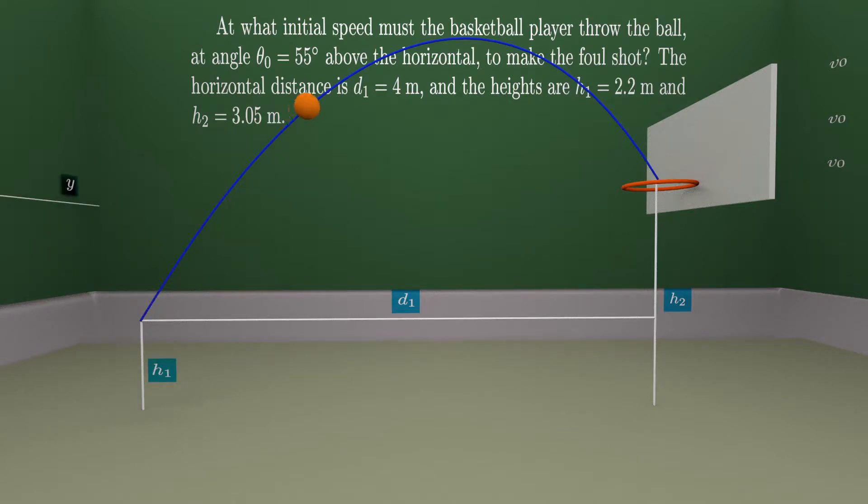At what initial speed must the basketball player throw the ball at an angle of 55 degrees above the horizontal to make the fall shot? The horizontal distance is 4 meters and the heights are 2.2 meters and 3.05 meters.